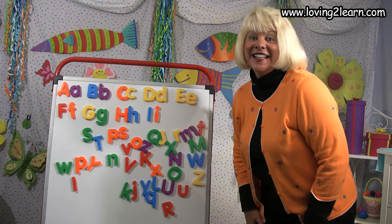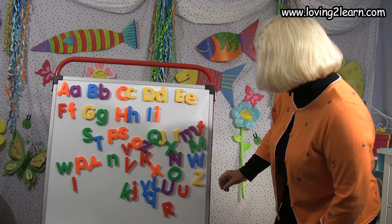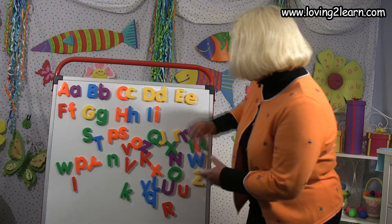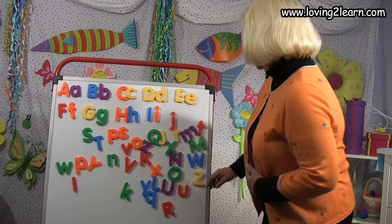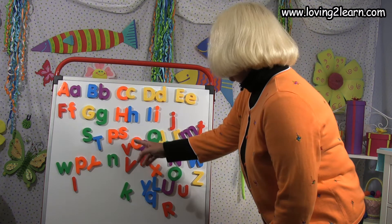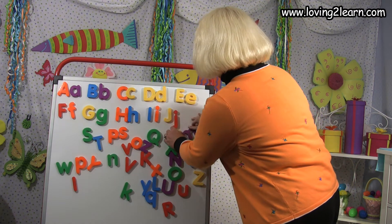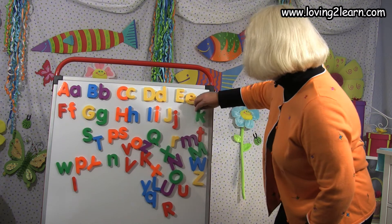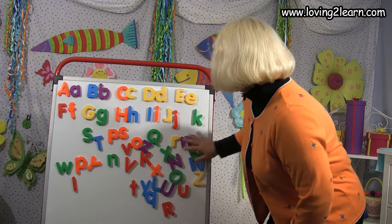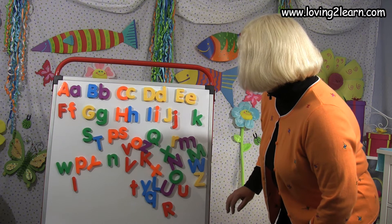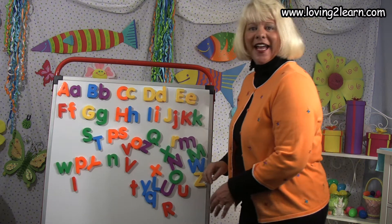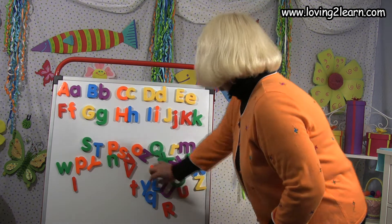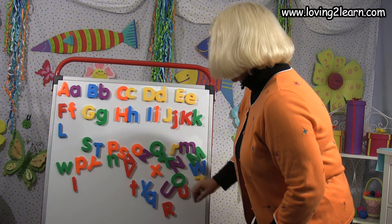Then we need the capital J. That's right. So here we have the small j. Let's see if we can find the capital K. There's the capital K. Now what letter are we looking for? That's right. Here's the capital L and the small l.